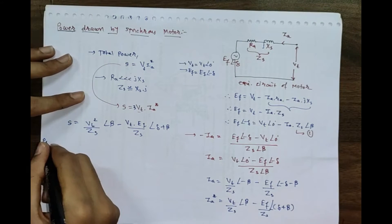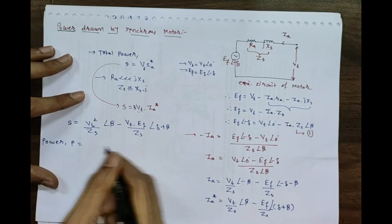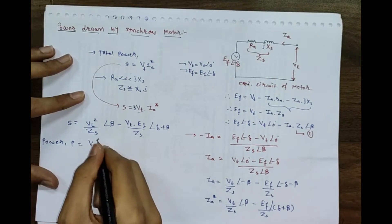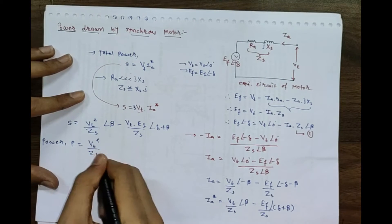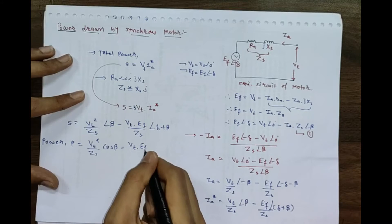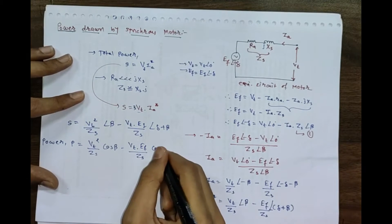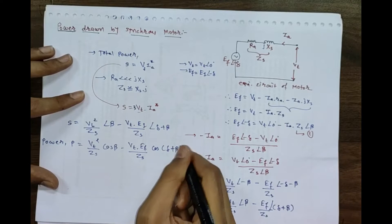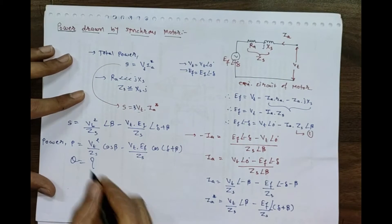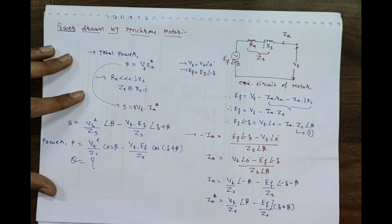For active power P, we take the real part of S. This gives: P = (Vt²/Zs)·cos(beta) − (Vt·Ef/Zs)·cos(delta + beta). Similarly, reactive power Q can be found by taking the imaginary part — replacing the cosine terms with sine terms.